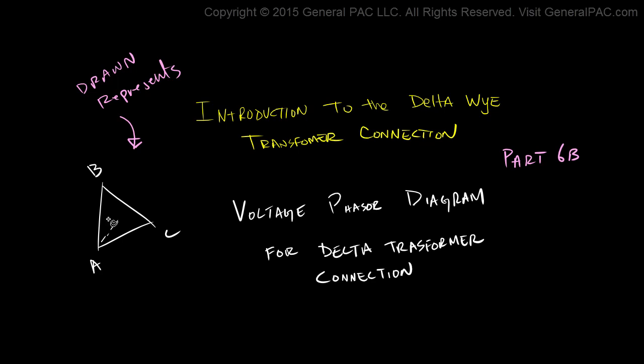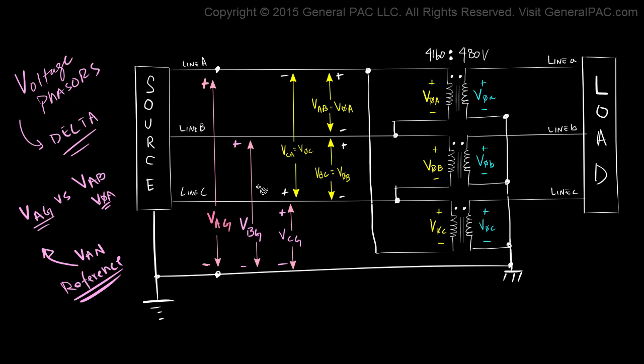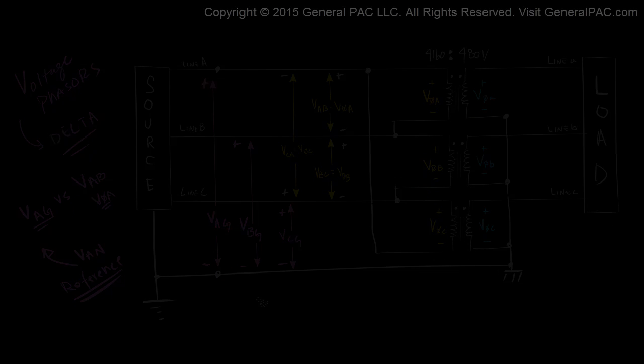We often find this illustration in transformer nameplates as well as engineering drawings, so we want to have a very strong understanding of this connection. In part 6a, we set up our voltage phasors and defined Vag, Vbg, and Vcg. We also said that there is a difference between Vag versus Vab or Vphase A, and that is the key to understanding voltage phasors for the delta connection.